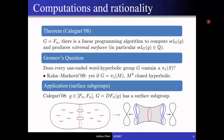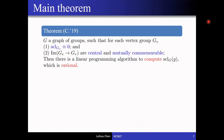Since then there have been several generalizations of Calegari's rationality theorem. Our main theorem puts all these generalizations into the same framework and also provides new interesting examples exhibiting this rationality phenomenon. We consider graphs of groups, and under certain assumptions on the vertex and edge groups, we show that there is a linear programming algorithm to compute the stable commutator length, and the result is always rational, no matter which element is the input.